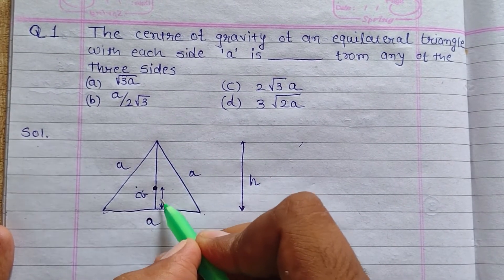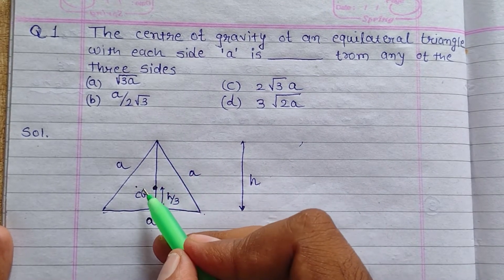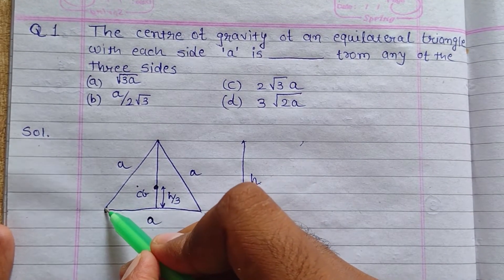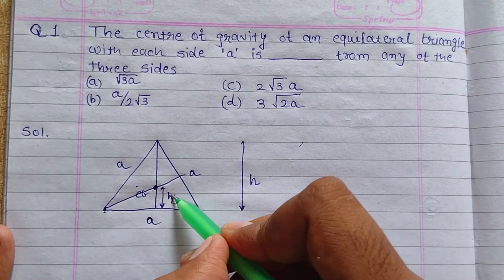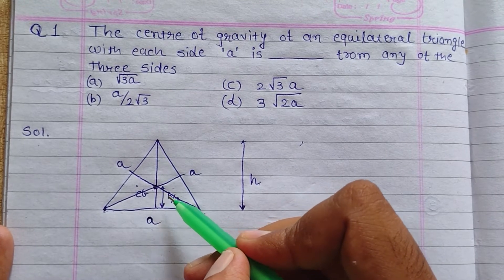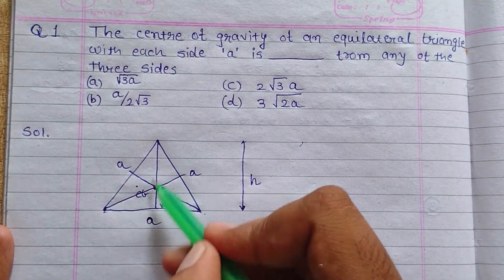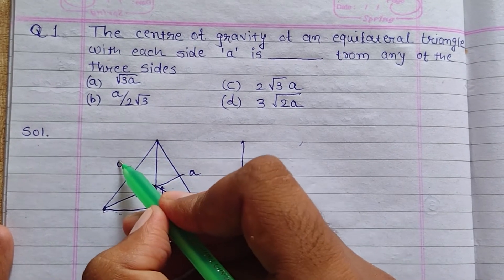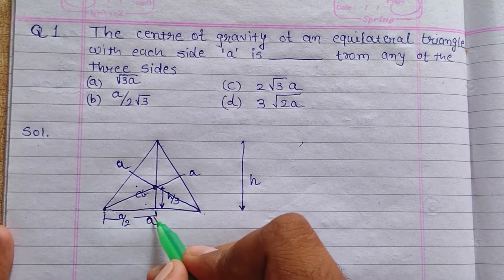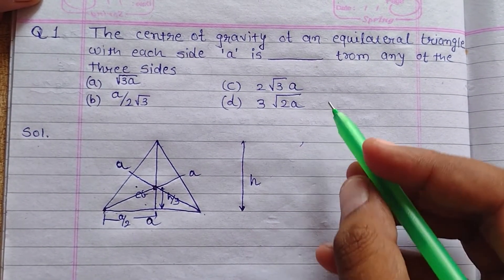The distance from the base is h/3, and we have to find this distance in terms of one of the sides of the equilateral triangle. This point is the intersection point of the medians of the equilateral triangle. Drawing the three medians gives you the CG. This gives an equivalent right-angle triangle with hypotenuse 'a', one side 'a/2', and height 'h'. We have to find h/3, so first we will find h using the Pythagorean theorem.